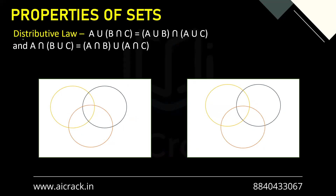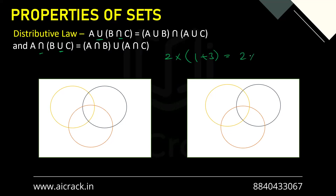The third law is distributive law. Here the operator is changing. The law states A union (B intersection C). We can take the analogy with numbers: 2 multiplied by (1 plus 3) — this multiplication gets distributed over 1 and 3, giving us 2 times 1 plus 2 times 3. So the middle operator remains the same and the outer operator gets distributed over the elements. This is exactly what happens here.